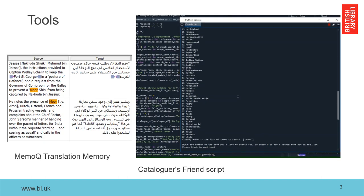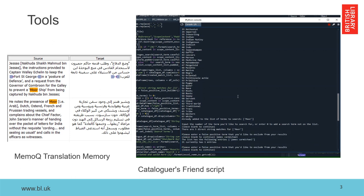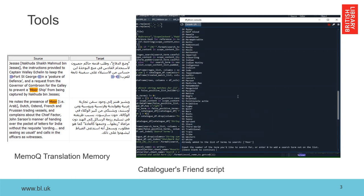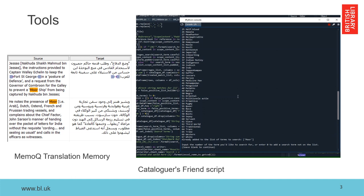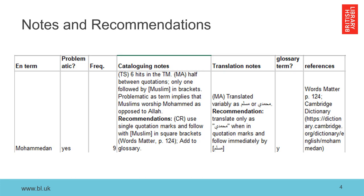We repurposed existing translation tools and built a custom Python script to search over 1.5 million rows of XML data. This allowed us to investigate how problematic terms were used and recommend an appropriate treatment.